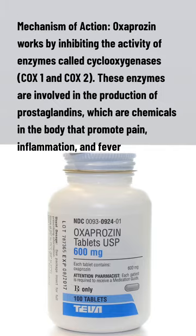Mechanism of Action: Oxaprozin works by inhibiting the activity of enzymes called cyclooxygenases, COX1 and COX2. These enzymes are involved in the production of prostaglandins, which are chemicals in the body that promote pain, inflammation, and fever.